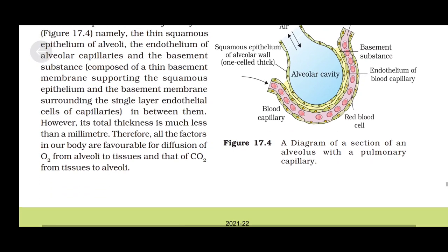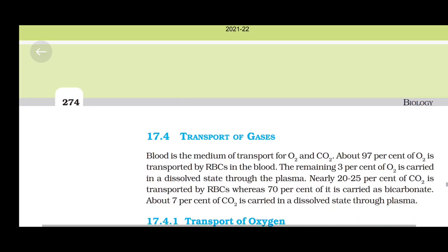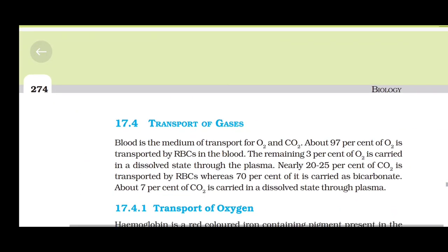However, the total thickness of the diffusion membrane is much less than a millimeter. Therefore, all factors in our body are favorable for diffusion of oxygen from alveoli to tissues and that of carbon dioxide from tissues to alveoli.